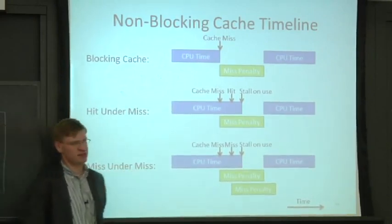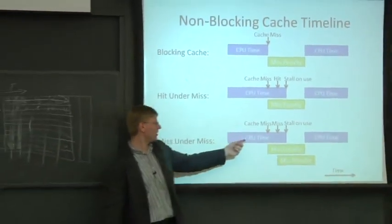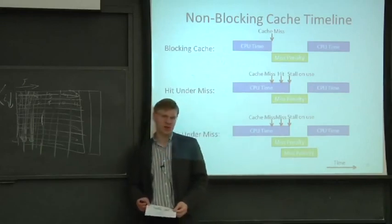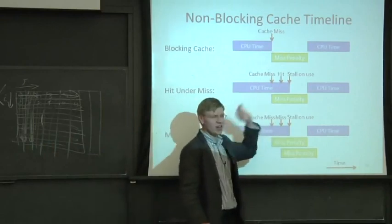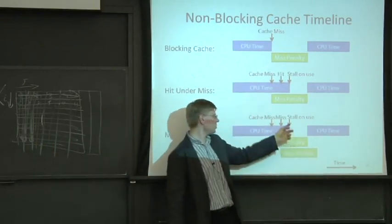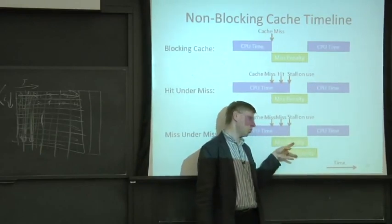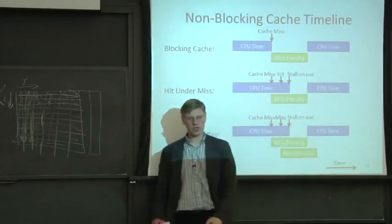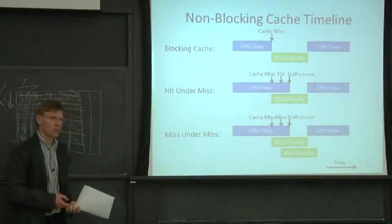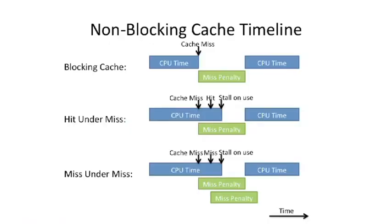With miss under miss, you're executing, take a cache miss, send something out to main memory, but don't stop — you keep executing, take another miss, and send that out to main memory as well. The CPU just keeps executing the whole time, overlapping multiple memory accesses with computation. This can be really powerful, and you can do this with an in-order processor. One thing to note: you typically have a limited number of outstanding memory accesses — maybe four or eight — with diminishing returns as you add more.